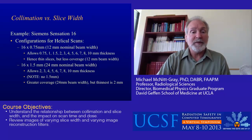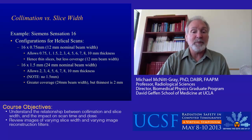In the 16 by 1.5 configuration — a 24 millimeter beam width — it only allowed 2, 3, 4, 5, 6, 7, 8, and 10 millimeter thicknesses. You could not get 0.75 or 1.5 millimeter reconstructed slice widths. It gave greater coverage, but the thinnest reconstruction was 2 millimeters. So there were definite trade-offs in those 16 detector row scanners.